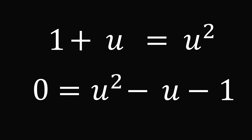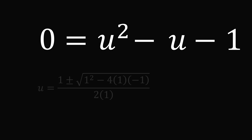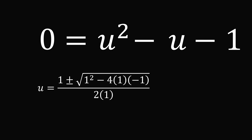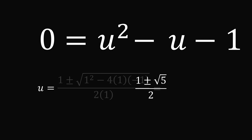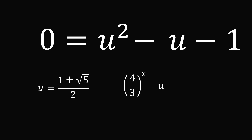We rewrite this as 0 equals u squared minus u minus 1, and apply the quadratic formula. u equals 1 plus or minus the square root of 1 squared minus 4 times 1 times negative 1, all over 2 times 1. This gives two possibilities: 1 plus or minus root 5, all over 2. But since u equals 4 over 3 raised to the power of x, and for real x this is greater than 0, we eliminate the negative value — 1 minus root 5 all over 2 — leaving only u equals 1 plus root 5 all over 2.